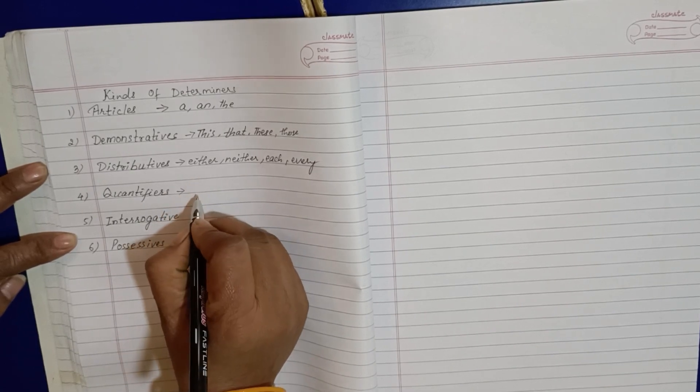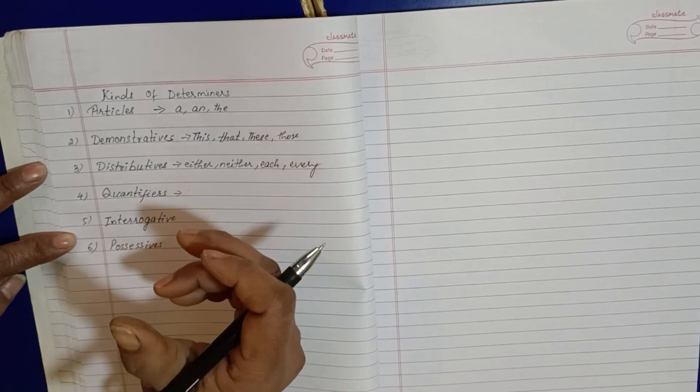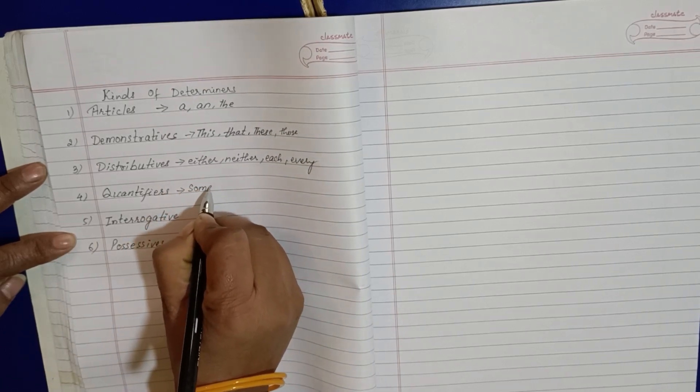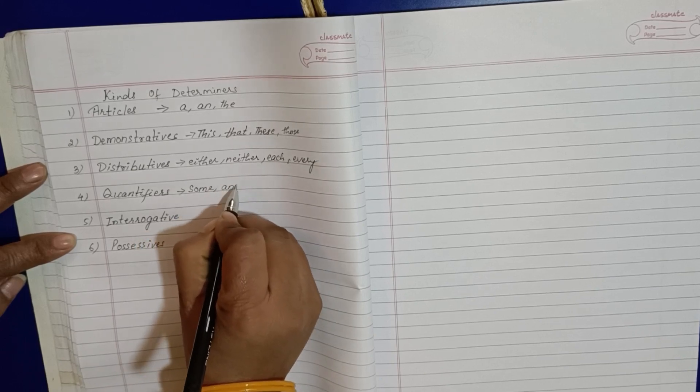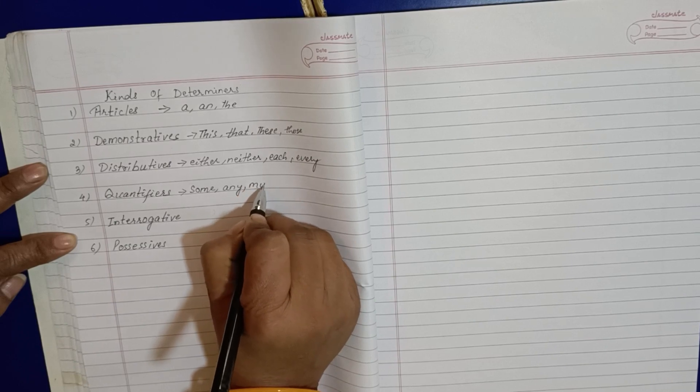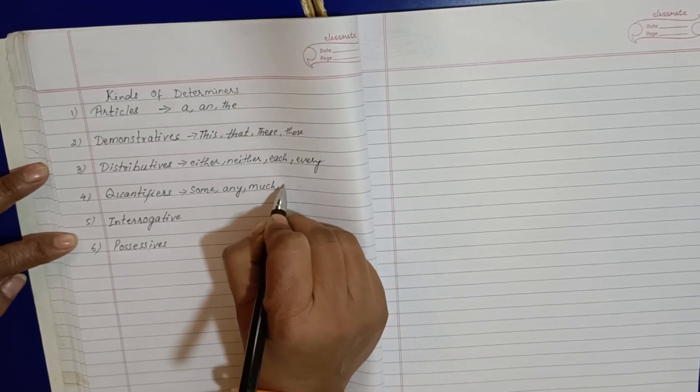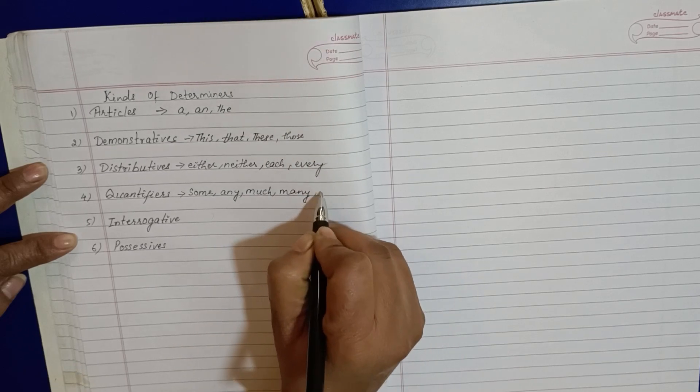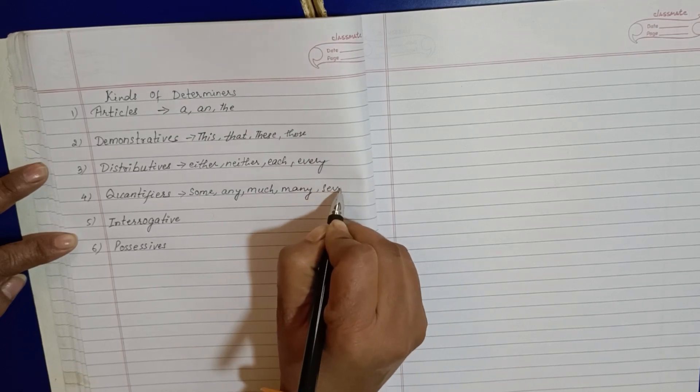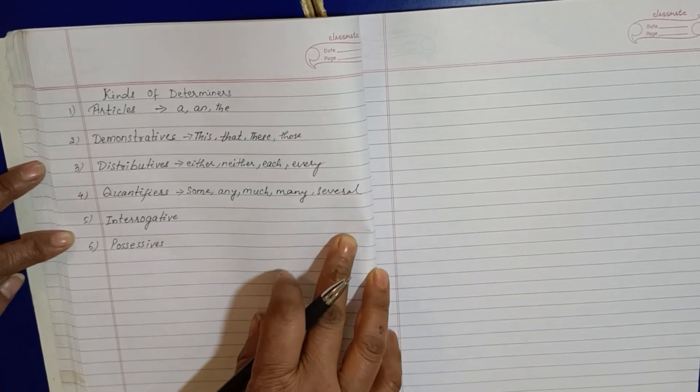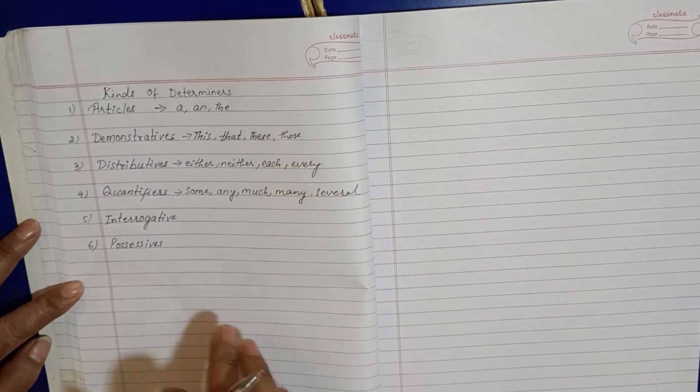Now quantifiers. Quantifiers means quantity. So, some, any, much, many, and several.